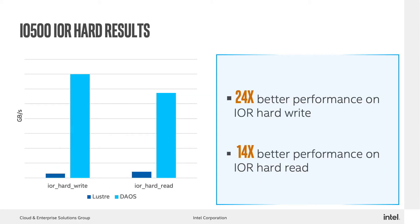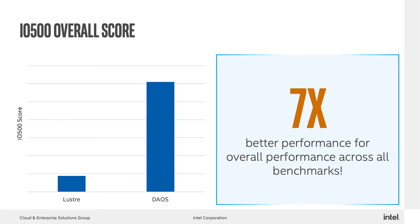Next, let's look at the IOR Hard numbers, which is split into IOR HardWrite and IOR HardRead. As opposed to MDTest, this benchmark is focused on measuring the bandwidth of the file system. You can see in the results here that the Deos performance again exceeds the Lustre performance, continuing to benefit from byte-granular persistent memory, from bypassing the kernel and doing all of its I/O in user space, as well as advanced algorithms for data placement. Between these two sets of benchmarks, it is clear that Deos has superior performance for today's modern workloads.